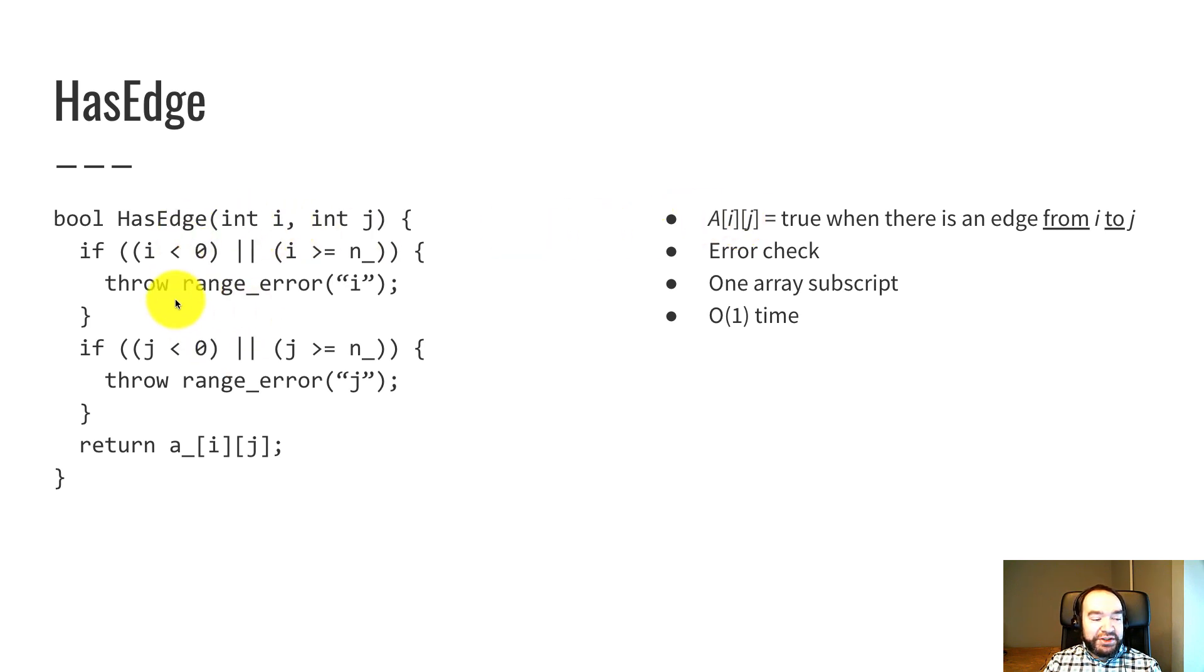So I've got an error check to check that i and j are legal indices. If i is less than zero or greater than or equal to n, throw an exception. We do the same thing for j. That's kind of the hardest part of this. We just return a[i][j]. Just look up row i column j and that tells us whether there's an edge there. So this takes constant time. Super simple and fast.